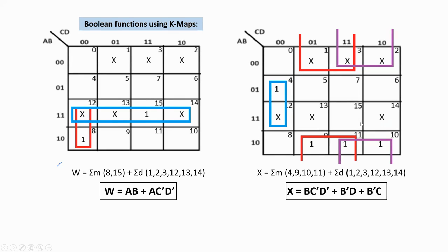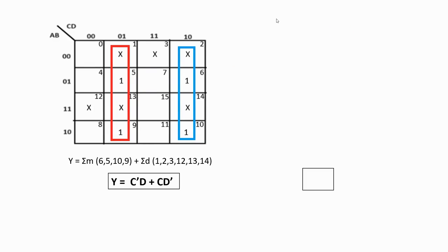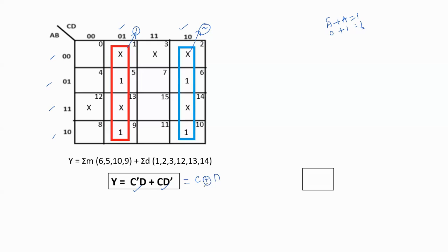For Y, this is the third K-map. Based on the min term numbers and don't cares, we place values and form groups. The first pair lies in all rows (so A, B are skipped) and the second column (C=0, D=1), giving C'D. The second pair lies in all rows and the last column (C=1, D=0), giving CD'. Note: some don't cares are not used in groups — it is not compulsory to include all don't cares, but it is mandatory to include all 1s. Therefore Y = C'D + CD', which simplifies to C XOR D.